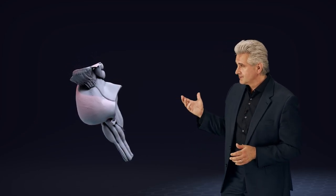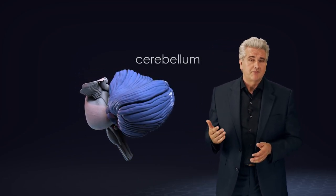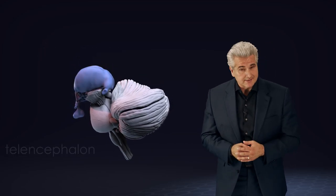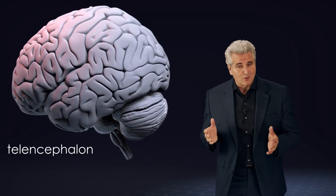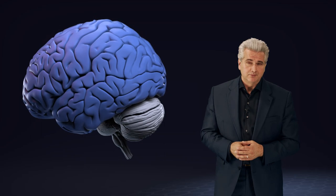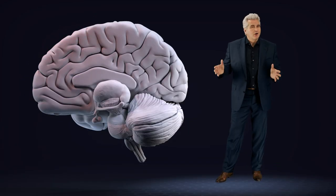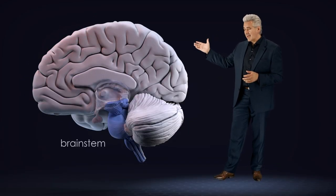Anatomists conceptually divide the brain into four major parts: the brainstem, the cerebellum, the diencephalon, and the telencephalon, also called cerebrum. We start with the brainstem.